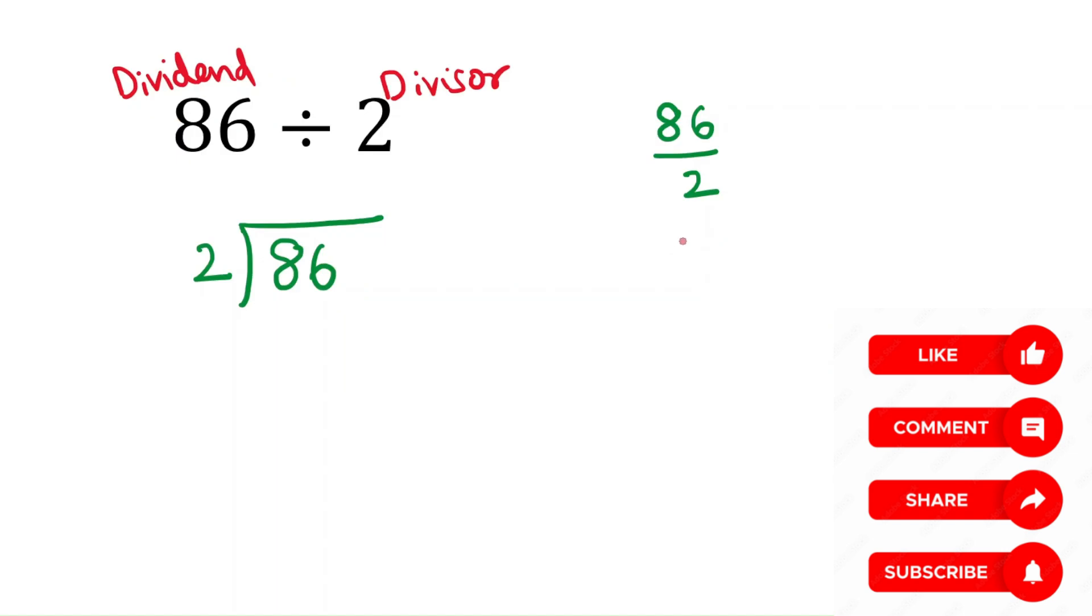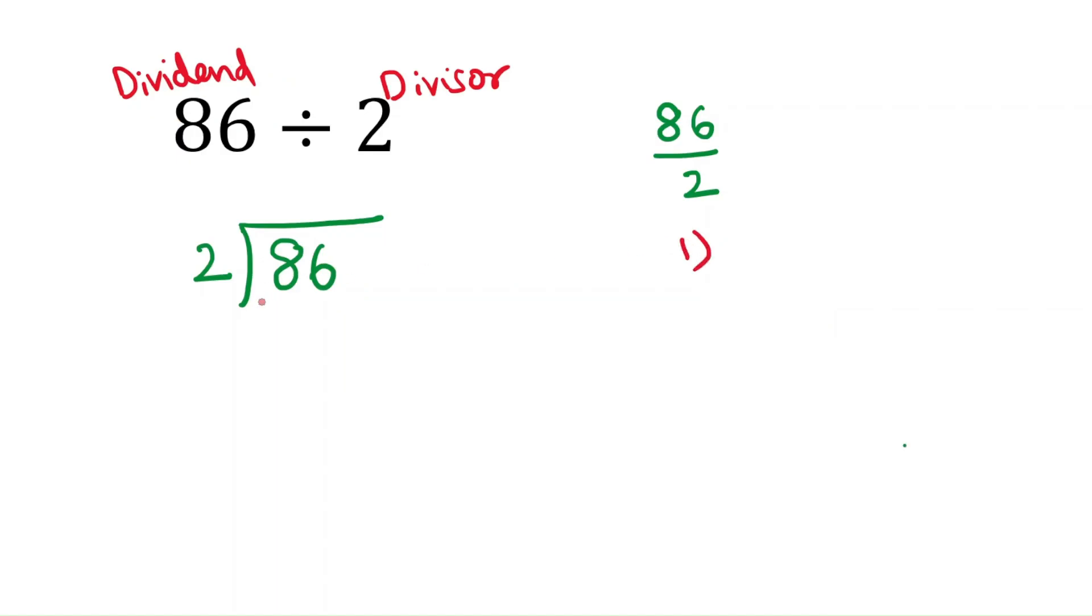Here the first step is divide. That means in the dividend you have to use the first digit from the left that is 8. So 8 by the divisor is 2. In the second step multiply. So how many times of 2 makes 8? 2 times 4 is 8. So write 8 here.